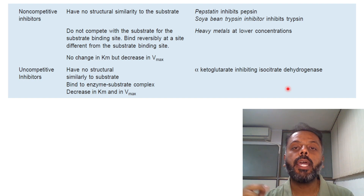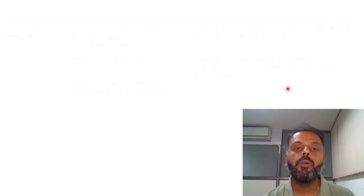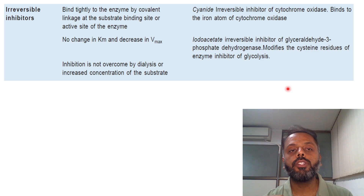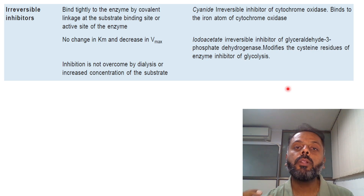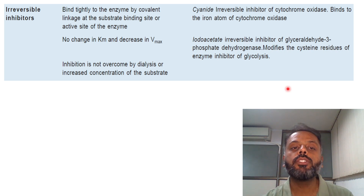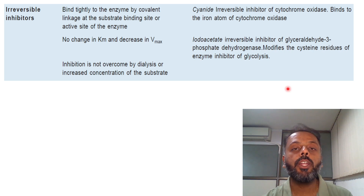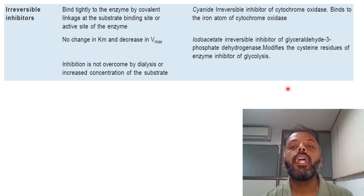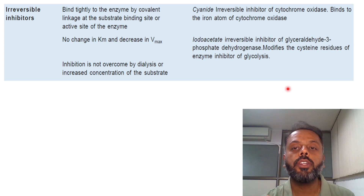That is all about reversible enzyme inhibition. Now, irreversible type of enzyme inhibition: here the inhibitor binds covalently to the substrate binding site or to the active site of the enzyme. There will be no change in the KM value, but there will be a decrease in the Vmax value. Inhibition cannot be overcome by increasing the concentration of substrate or by dialysis. Those are the features of irreversible type of enzyme inhibition.